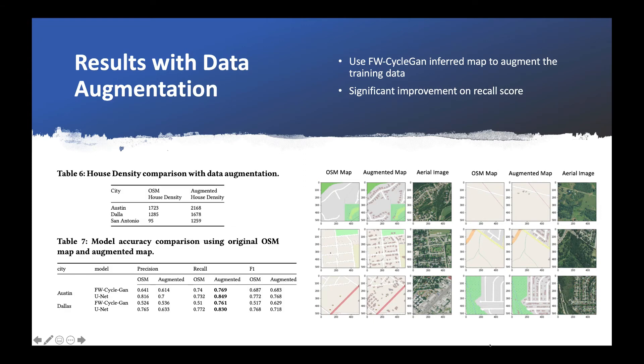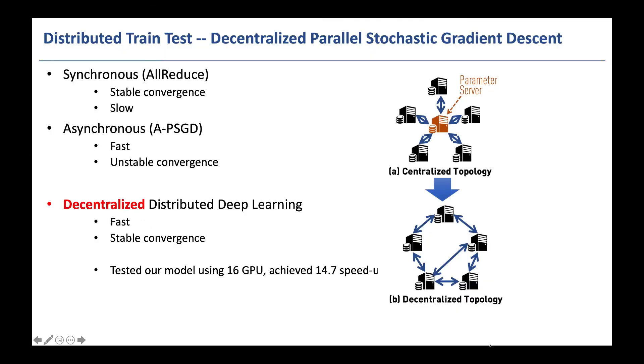By using the augmented training dataset, we have been able to significantly improve the performance of both feature-weighted CycleGAN and U-Net, especially U-Net. For the Austin dataset, we achieved a recall score of 84.9%.